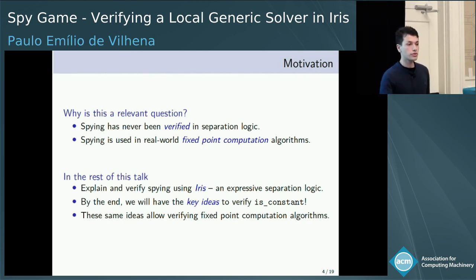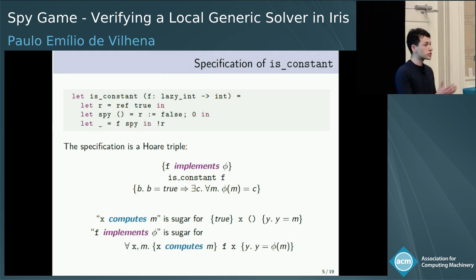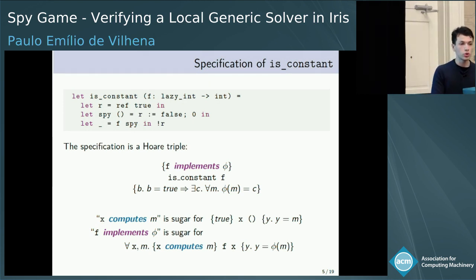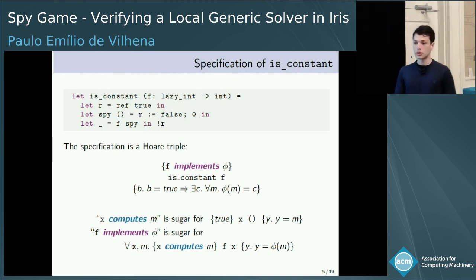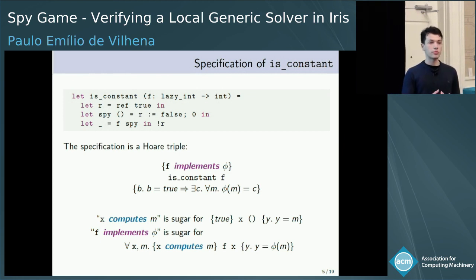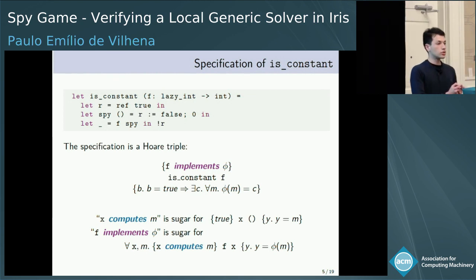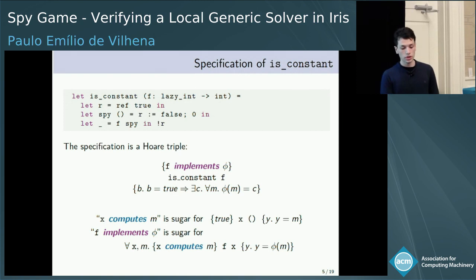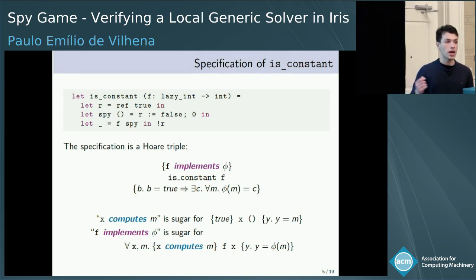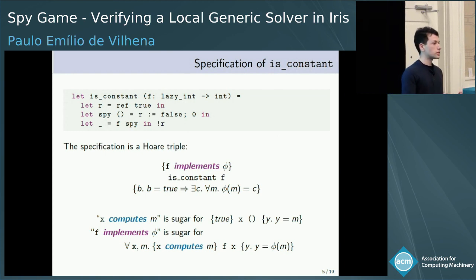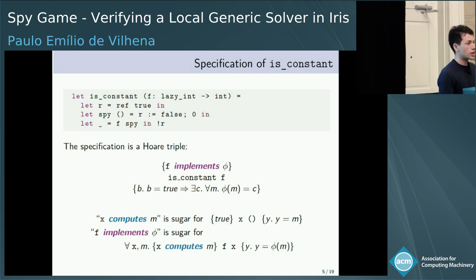The first step in the verification is to propose a specification. The specification reads as follows: if the program f implements a mathematical function phi, then after the execution of is_constant applied to the program f, it returns a boolean b such that if b is true, then phi is a constant function.